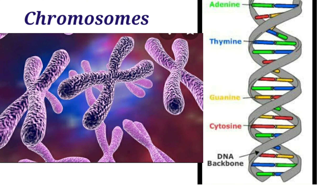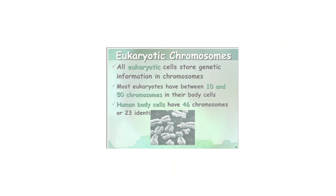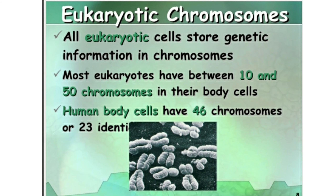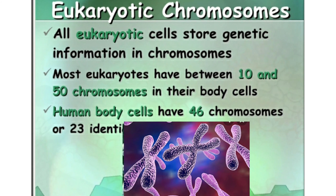DNA is located in the chromosomes. Chromosomes carry hereditary information from one cell to another, from parent cell to daughter cells. In prokaryotes like bacteria, the DNA forms one circular chromosome attached to the inside of the cell membrane. In eukaryotic cells, chromosomes store genetic information. Human body cells have 46 chromosomes, or 23 pairs of chromosomes.